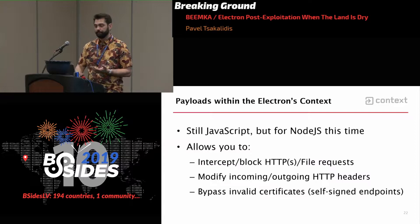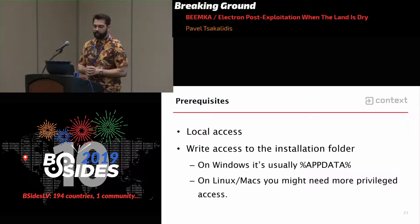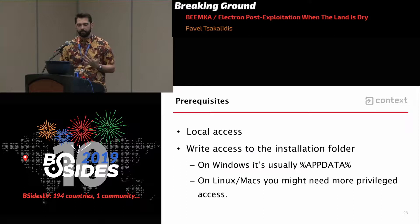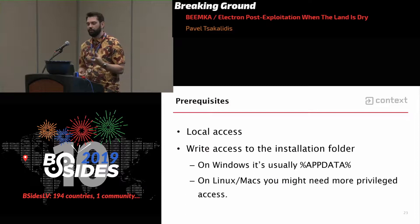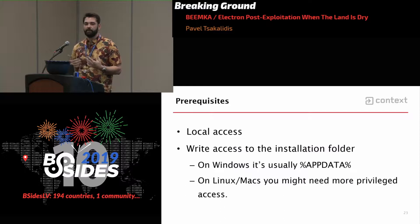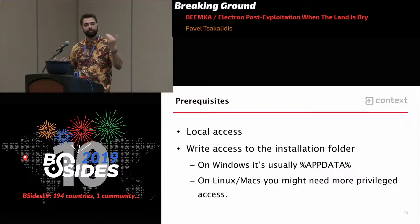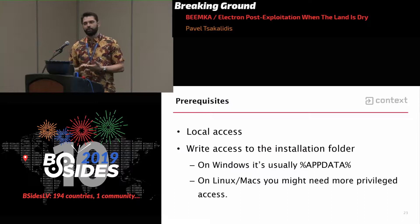What do you need to make this work? Obviously you need local access, as in the red team scenario. And you need write access to the installation folder. On Windows it's easier — if an Electron installer detects a low-privileged user, it installs in AppData, where you have write access. But most installers also offer system-wide installation to Program Files, which makes life more difficult. On Linux and Mac, because elevated privileges are required to install, it's a little more complicated.